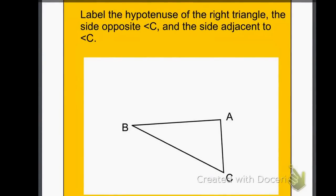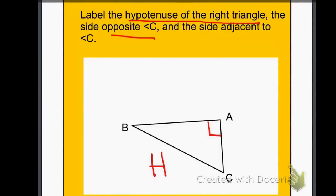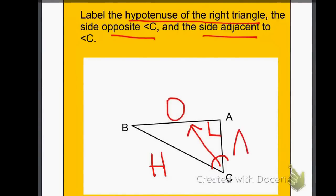Again, same thing: label the hypotenuse of the right triangle. I located my right angle, so the hypotenuse is across from that. The side opposite angle C — here's angle C — across would be opposite. Adjacent to C would be the other side right beside C, so that would be my adjacent.